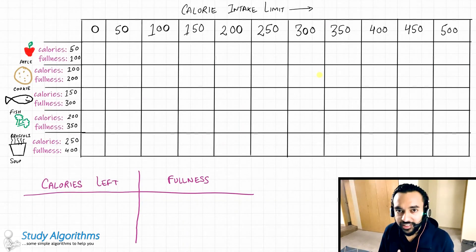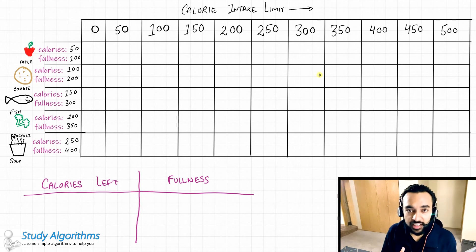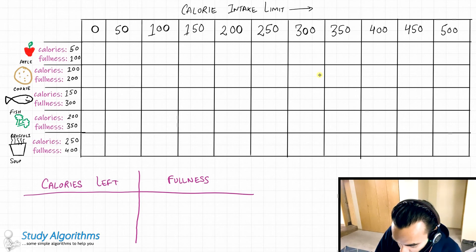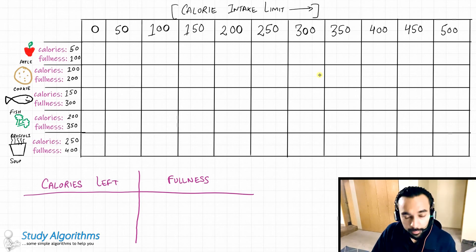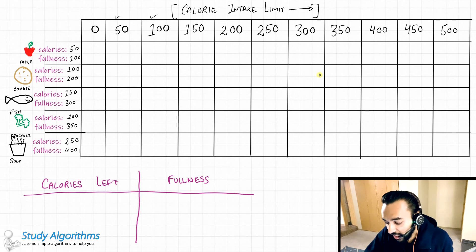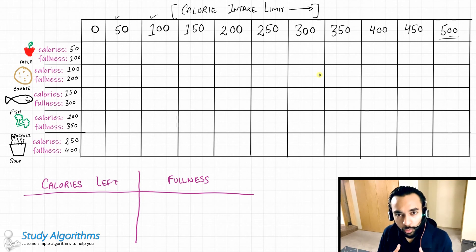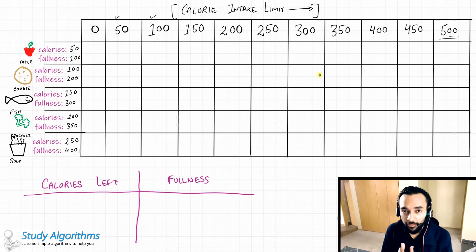If you remember from our previous examples, we need some kind of a memory structure to store the data. In the previous case, it was an array. Since this problem is a little more advanced, we would be using a matrix or table. In the first row of the table, I have a calorie intake limit — what if I can have a maximum of 50 calories, 100 calories, and so on up to 500. In all of these cells, we will write down how much fullness we can achieve. We take up all the food items one by one and try to fill up this table.